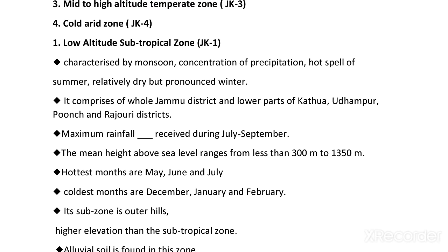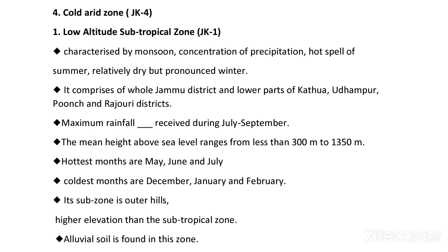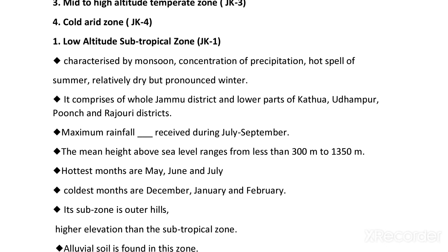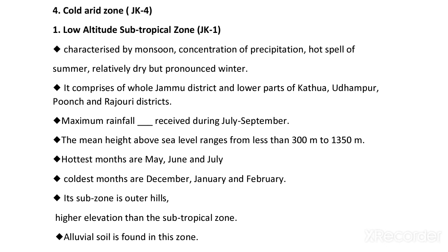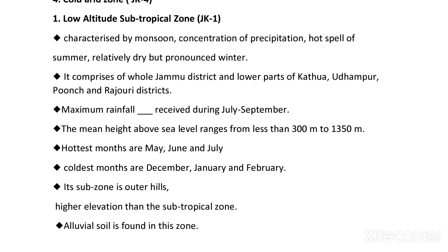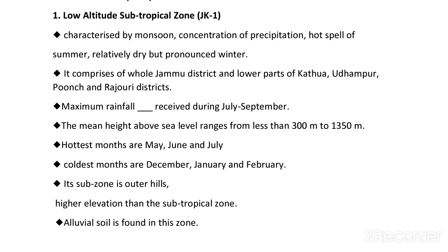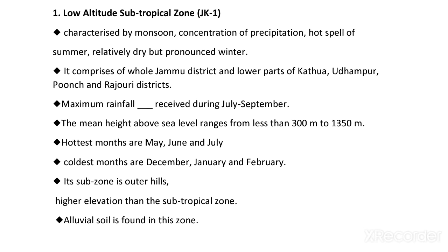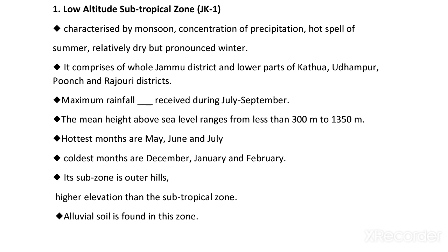The hottest months in JK1 zone are May, June, and July, and the coldest months are December, January, and February. This zone has some sub-zones in the outer hills with slightly higher elevation than the subtropical zone. Illuvial soil is found in this zone, which supports the cultivation of maize, wheat, and cereals.